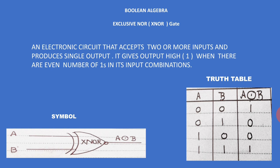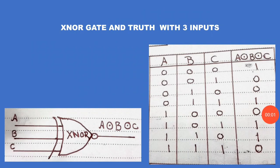In the truth table: zero-one has an odd number of ones so output is zero. One-zero has a single one — odd — so output is zero. One-one has two ones — even — so the output is one.